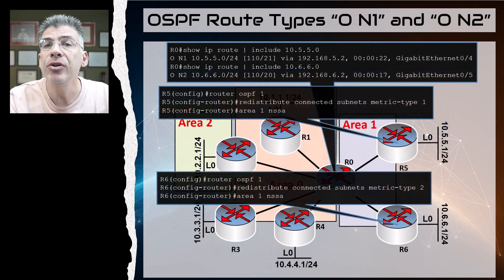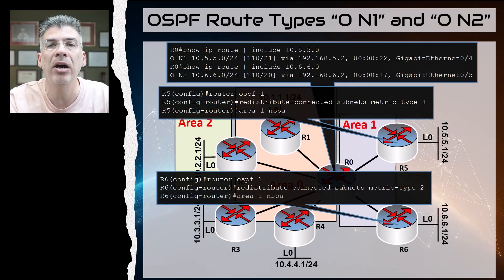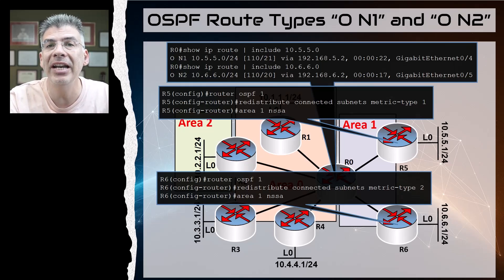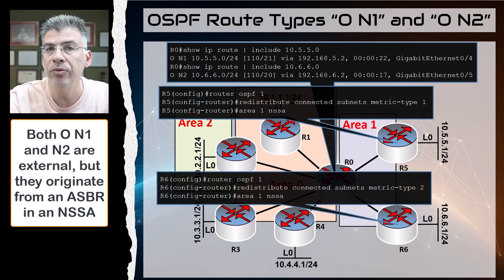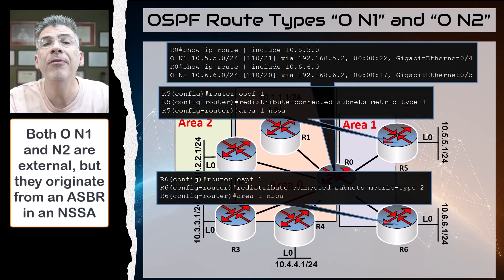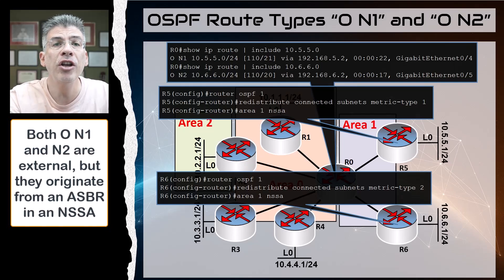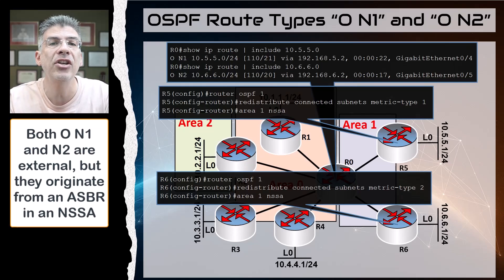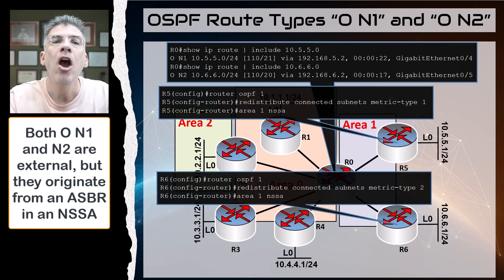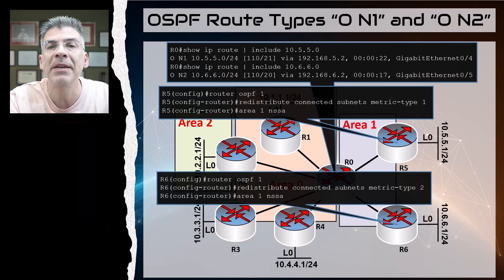The last two network types have a similar philosophy to the E1 and E2 external type routes — these are the N1 and N2 types. Both are external routes as well, but they come from an NSSA network type. If you're not sure what an NSSA is, not to worry — I'll be doing a video on OSPF stub networks in the near future, so watch out for that.